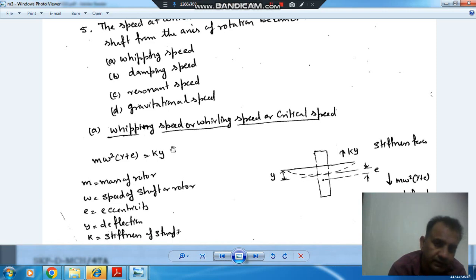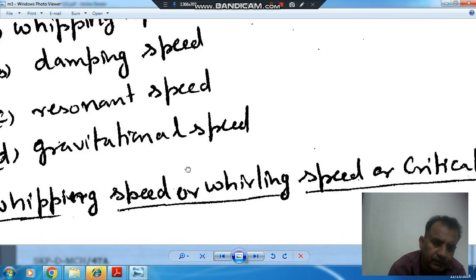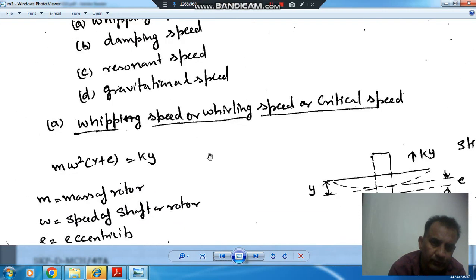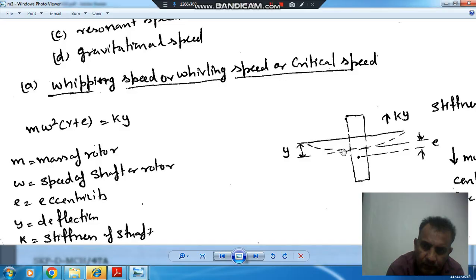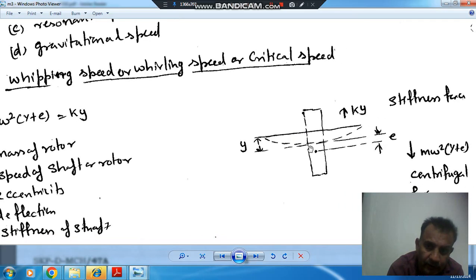To understand this, we will understand the concept of whirling of shaft or critical speed of shaft. This is a shaft and initially before rotation, a rotor is mounted on the shaft and it has eccentricity with the shaft axis. When this rotor starts rotating, then initially its radius will be E.